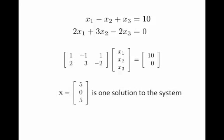We've seen before that x1 equals 5, x2 equals 0, x3 equals 5 is one solution. What's nice about this is that now I can list all three of those values as a single vector — as sort of a list out of a spreadsheet.